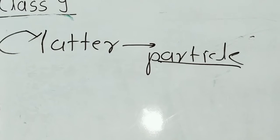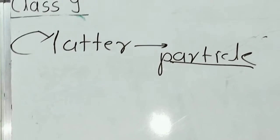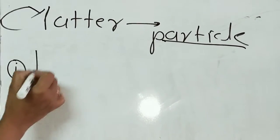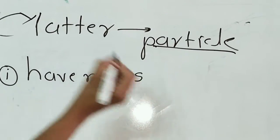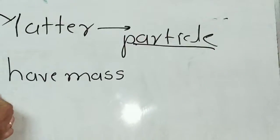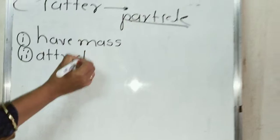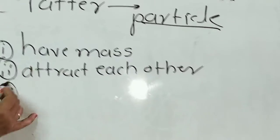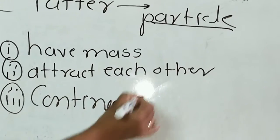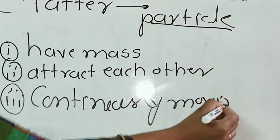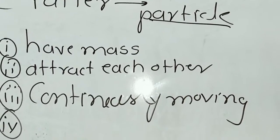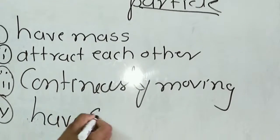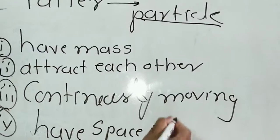Now we see some characteristics of the particles, and with the help of activities you will understand them very well. The first one: particles have mass. Second one: particles attract each other. Third: particles are continuously moving. And the fourth one: particles have space in between them.